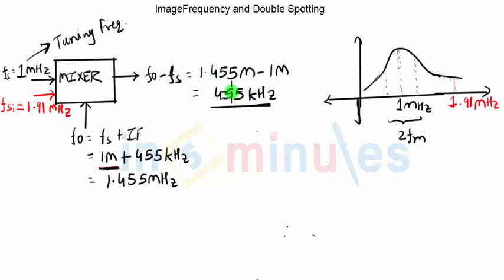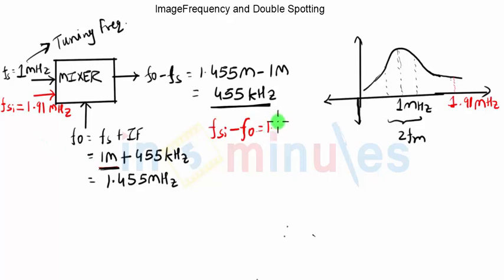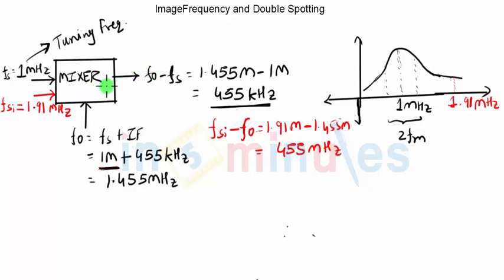Apart from F4 minus FS which generates 455 kilohertz, FSI is an unwanted signal which has entered into the receiver. The signal is present at 1.91 megahertz. FSI minus F4 equals 1.91 megahertz minus 1.455 megahertz, and this difference comes out to be 455 kilohertz. Because the output bandpass filter of the mixer is designed to operate at 455 kilohertz, apart from F4 minus FS it will also select FSI minus F4 as its output signal.